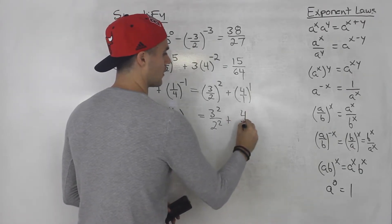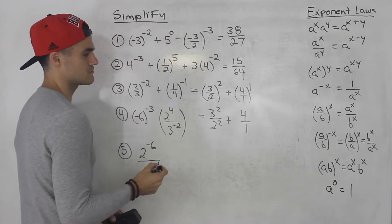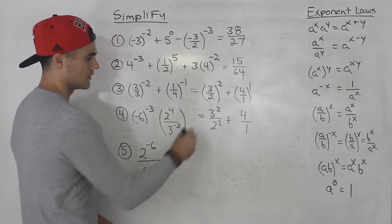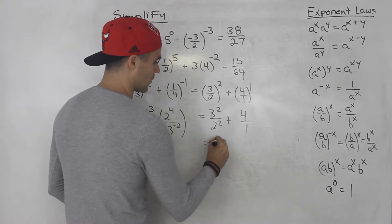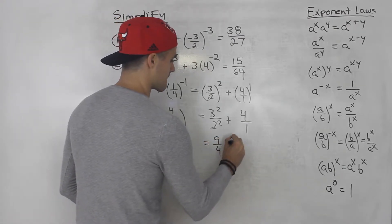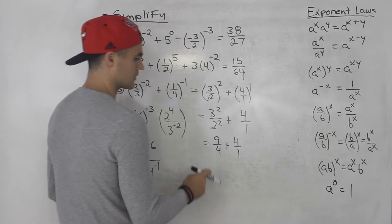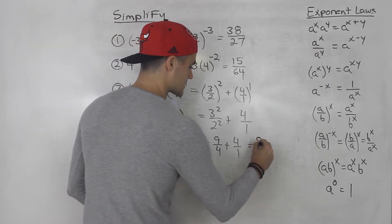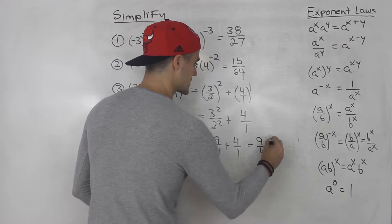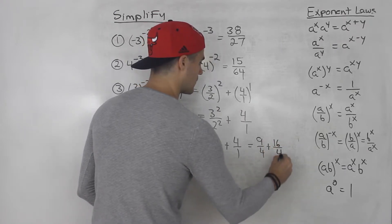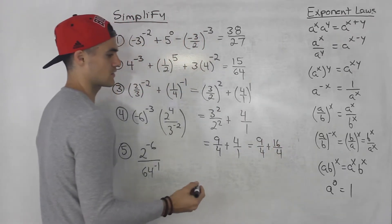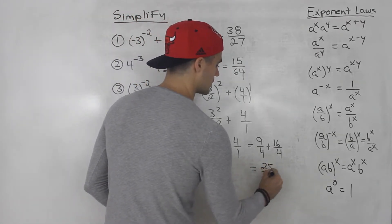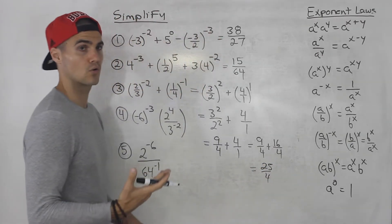This four is going to be over one because we're adding fractions and need a common denominator. So this ends up being nine over four. Plus four over one — the common denominator between these is four. So this ends up being nine over four plus 16 over four. Nine plus 16 is 25, so the final answer is 25 over four.